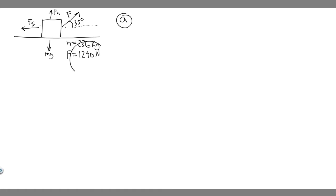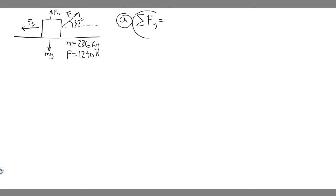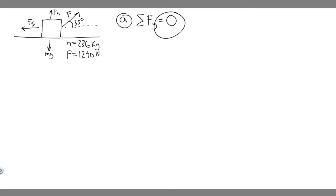Let's start with Part A. We're trying to calculate the normal force on the sled when this force is being applied. The way we calculate normal force is by taking the sum of the forces in the y direction, and that sum equals zero. The reason it equals zero is because we're not moving in the y direction — the sled is at rest. If velocity is zero, then acceleration is zero, and force equals MA, meaning it's going to be zero.